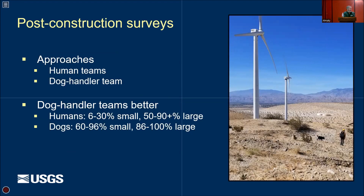When searching for fatalities, you can either use humans or dogs. In Israel, it's required to use dogs, and dogs are way better than people at this. People find between 6 and 30% of small animals and 50 to 90% of large animals. Dogs can find almost 100% of small animals and very close to 100% of larger animals. You do need well-trained dogs, but there are more and more companies doing this — it might be something useful to develop in Kazakhstan.